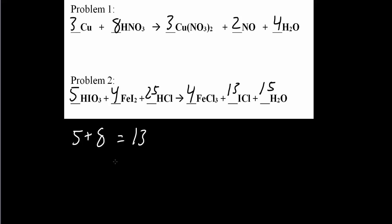We already did I. And just finally Cl. 25 Cl's here. We have 13 plus 4 times 3 is 12. 12 plus 13 is 25. So all of these terms are balanced.